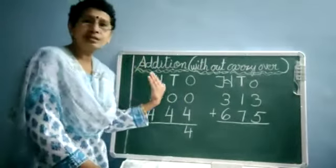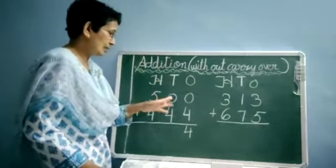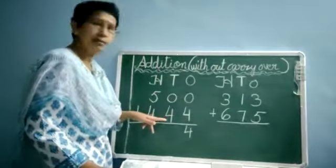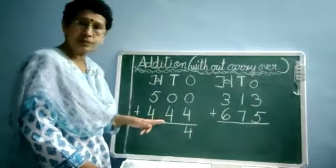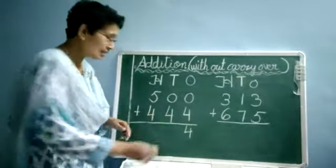Now, we are coming towards the tens side. Again, the first number is 0, second number is 4. So 0 plus 4 is? Again, you will get the answer 4.